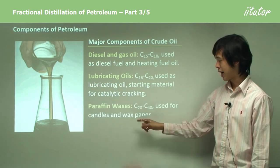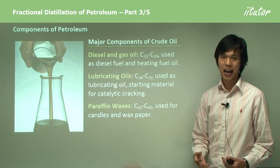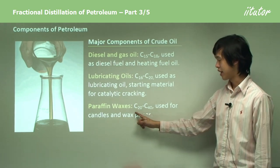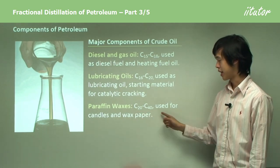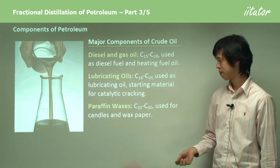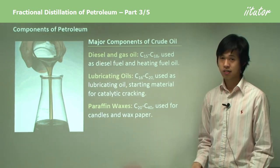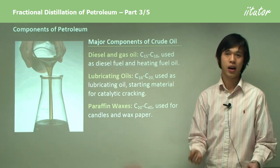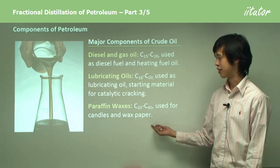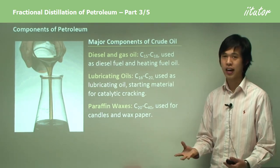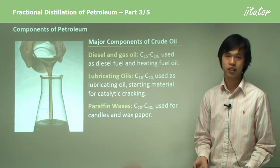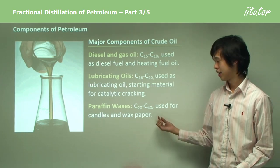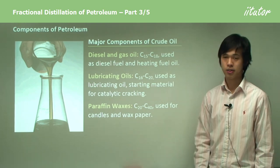Paraffin waxes — we're talking about candle wax here — are anywhere between C20 to C40. They're also used for wax paper. It's very, very heavy and very solid — solid at room temperature — and that's what we use it for.